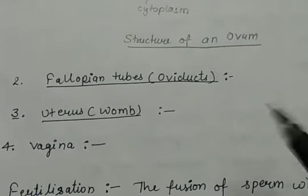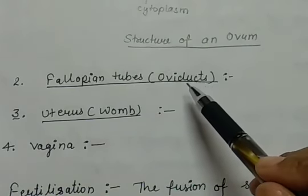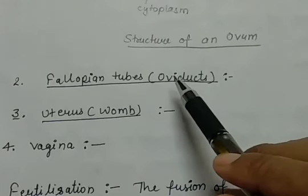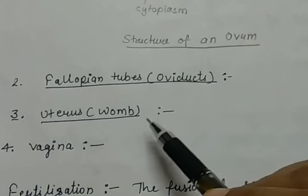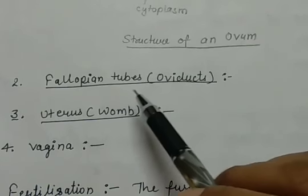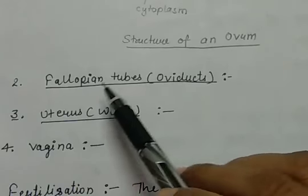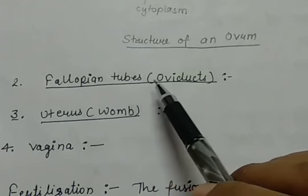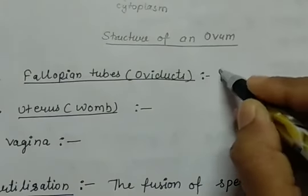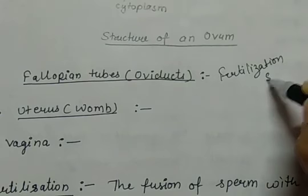Now let us move to the second part — the fallopian tubes. Fallopian tubes are also called oviducts or uterine tubes. They carry the eggs from the ovary to the uterus. The ovaries produce eggs and transfer them into the fallopian tube. The purpose of the fallopian tube is to carry these eggs from the ovary to the uterus, and here in the fallopian tube the fertilization — the fusion of male and female sex cells — will happen. So the fallopian tubes are also called the fertilization site.